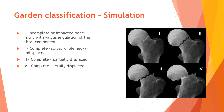Garden classification of intracapsular fractures. First: incomplete or impacted bone injury with valgus angulation of the distal component. Second: complete fracture across the whole neck, undisplaced. Third: complete, partially displaced. Fourth: complete, totally displaced.